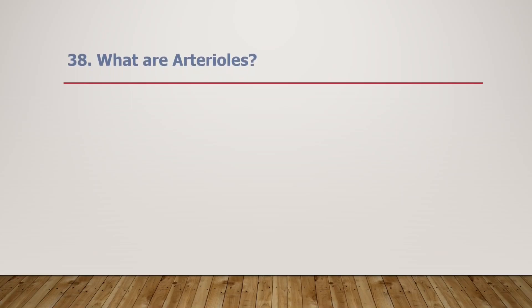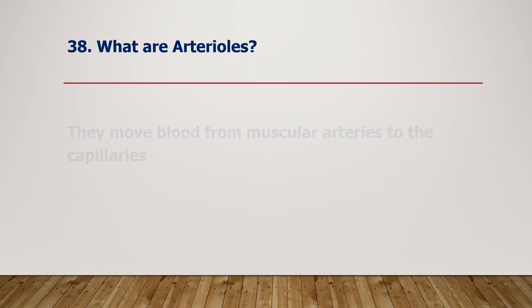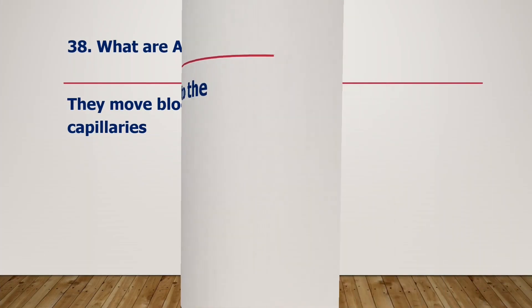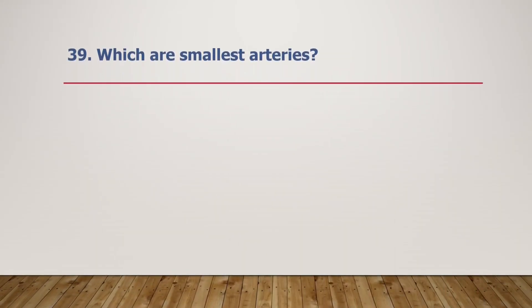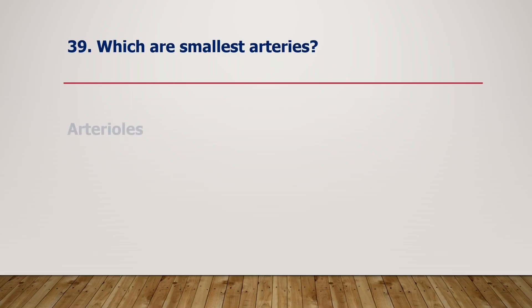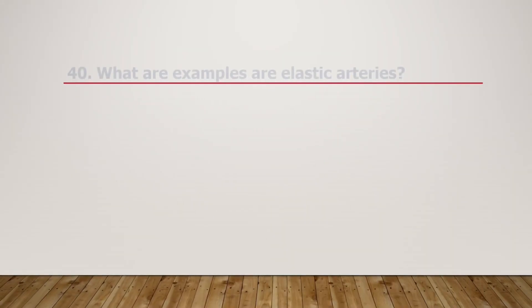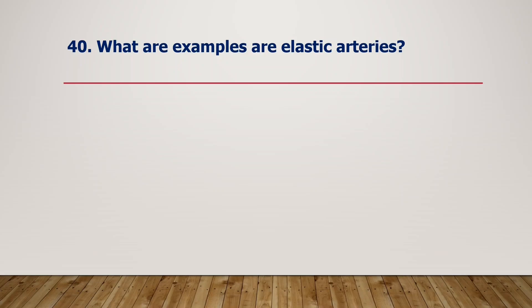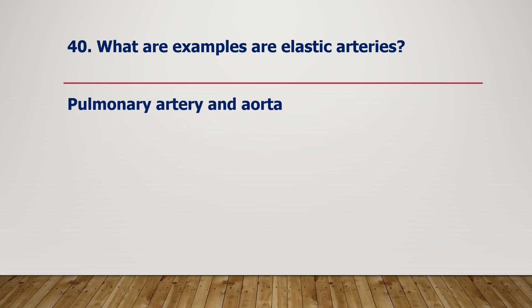What are arterioles? They move blood from muscular arteries to the capillaries. Arterioles are the smallest arteries. What are examples of elastic arteries? Pulmonary arteries and the aorta are examples of elastic arteries.